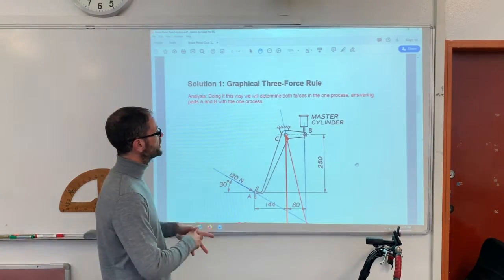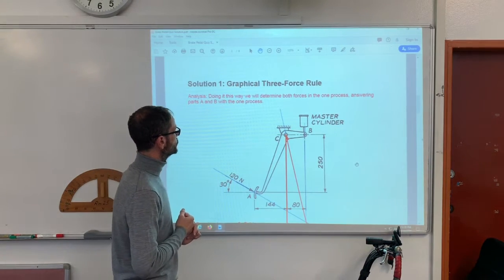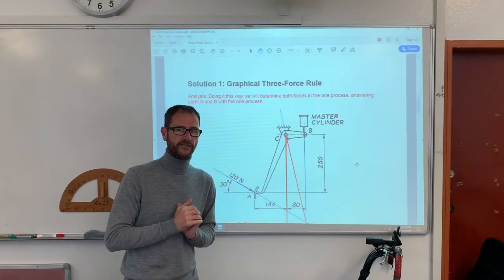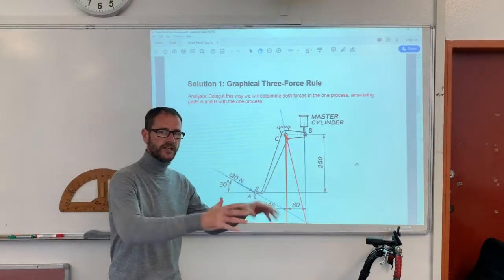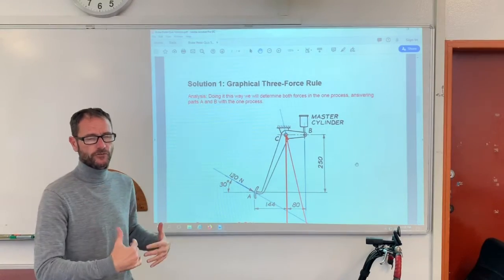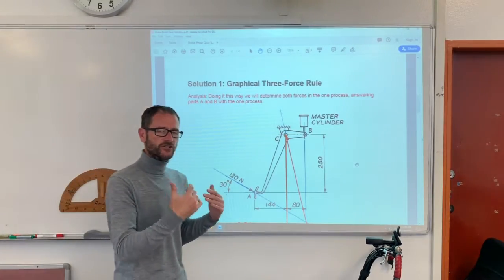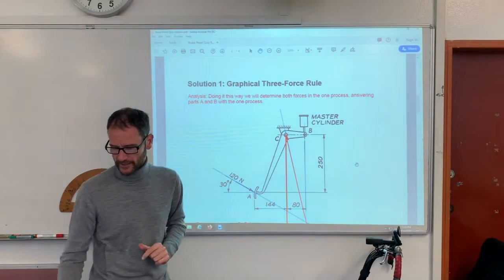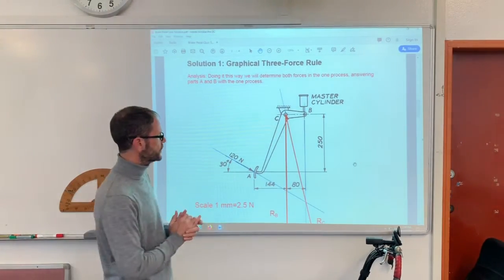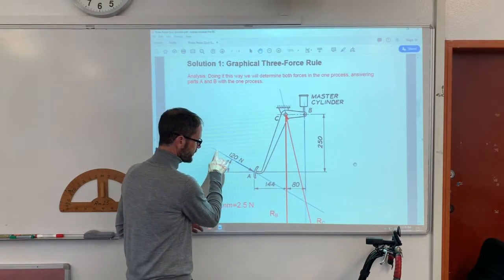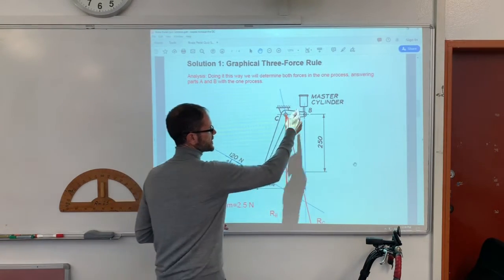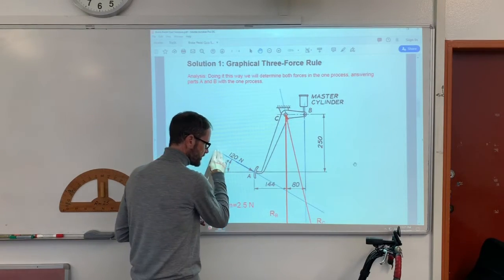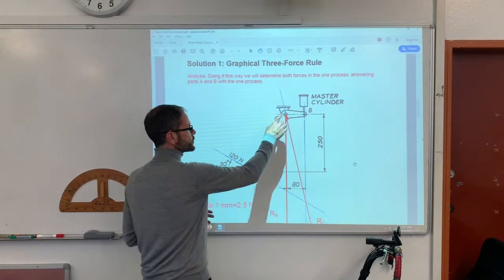So the first method is to do it by the graphical three force rule. Now doing it this way, we're going to determine both forces in the one process. We're not going to find one force and then find another through an additional process. So even though the question is in two parts, 1A and 1B, in this method you're going to find them all at the same time. Now let's have a look at what's happening first. Let's extend the line of action of the 120 Newton force. Let's extend the line of action of the master cylinder, because we know the master cylinder is vertical. We know this one's at 30 degrees. This one is unknown.